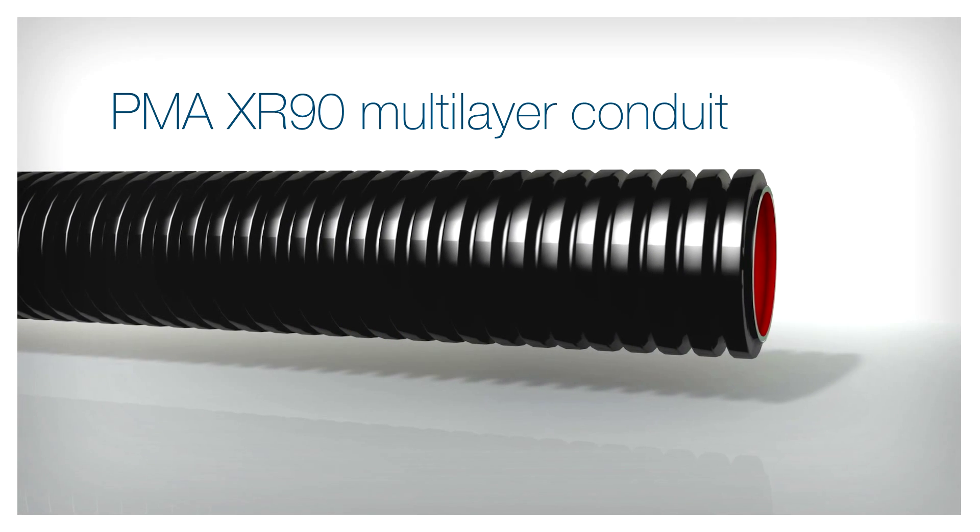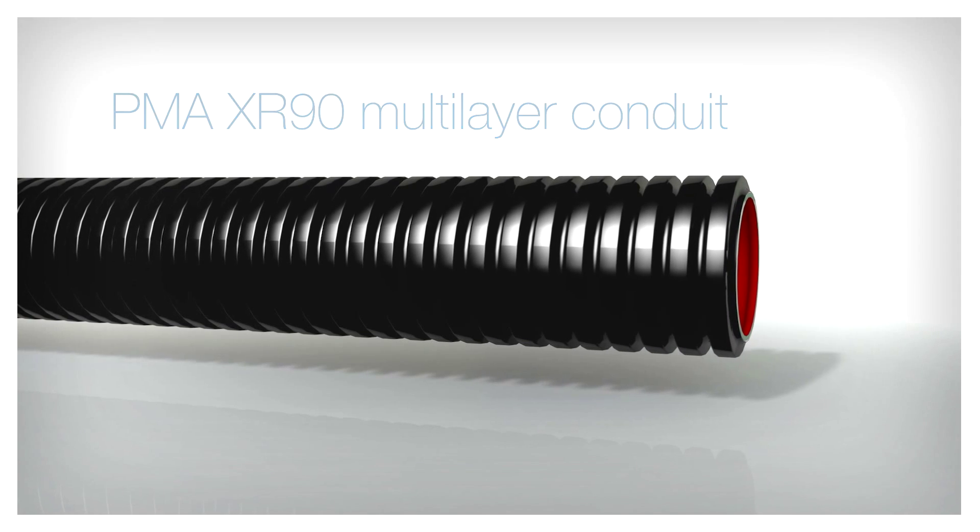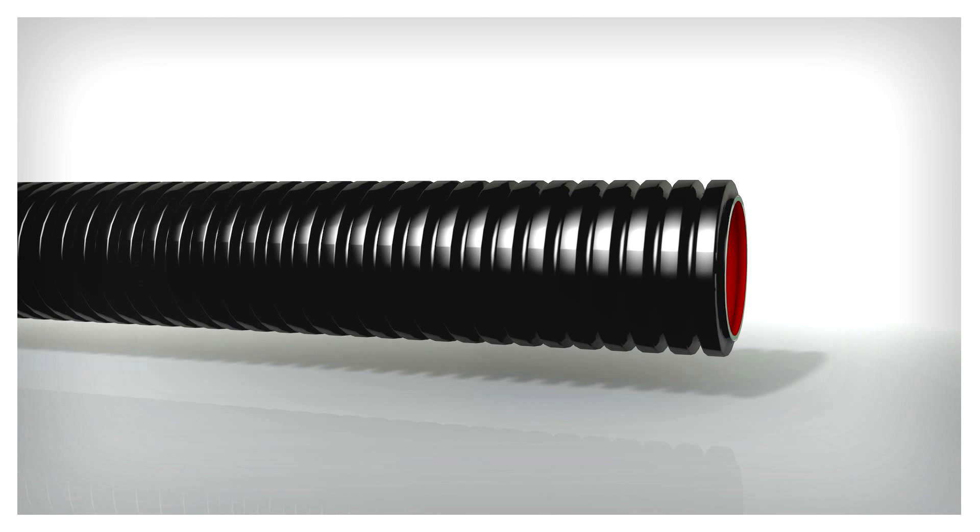The PMA XR90 Multilayer Conduit has a wear indicator, consisting of three different colored, specially formulated polyamide layers. These indicate the extent of the wear which has occurred.